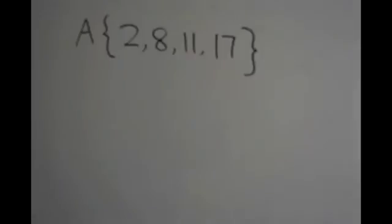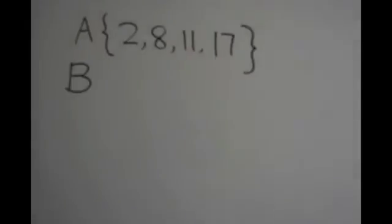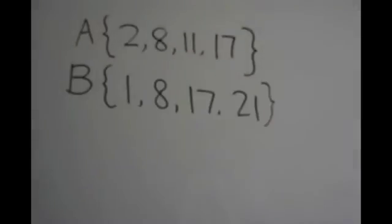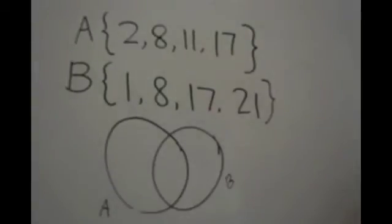A set is a well-defined group of objects or symbols. The objects or symbols are called elements of the set. The elements of set A are 2, 8, 11, and 17, and the elements of set B are 1, 8, 17, and 21. This information can be displayed on a Venn diagram with set A and set B as circles with a common middle area.